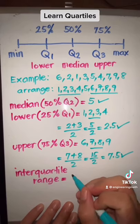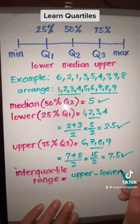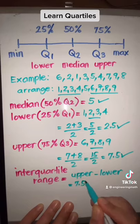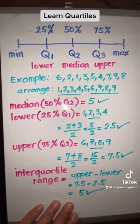Now, the last one is the interquartile range, which is simply the difference of the upper and the lower. So upper minus lower is 7.5 minus 2.5, which equals 5.